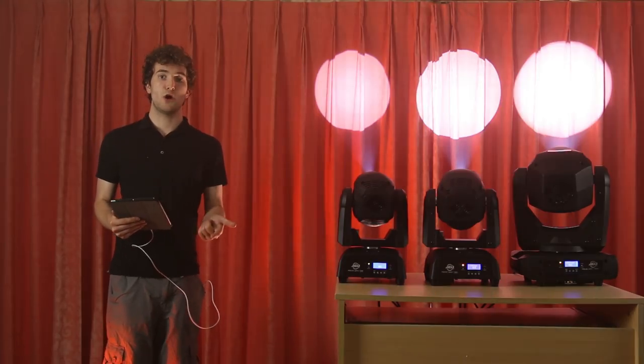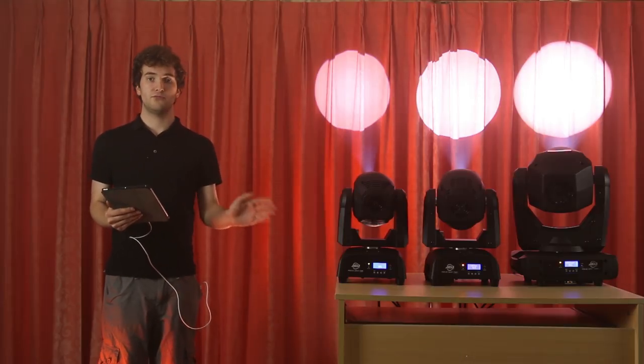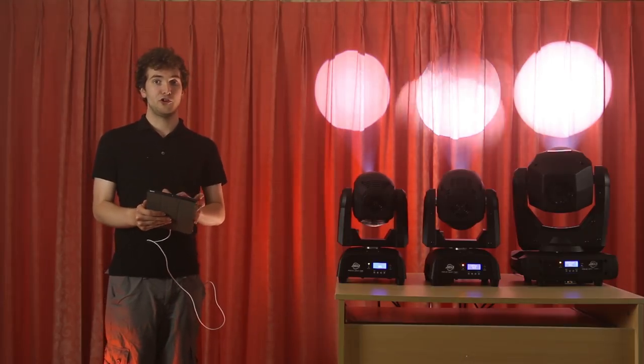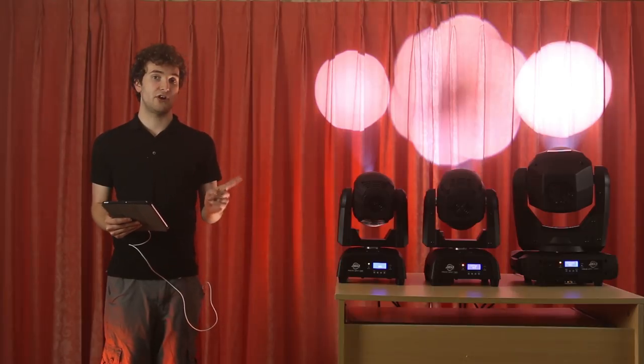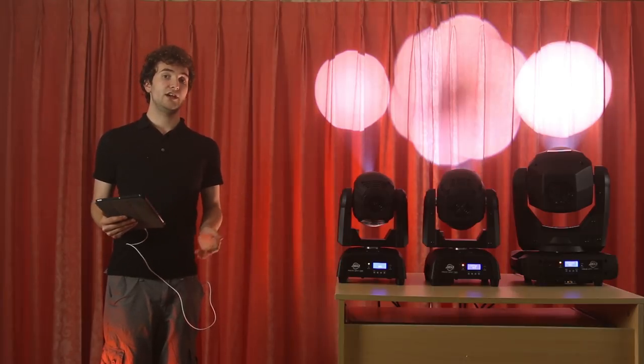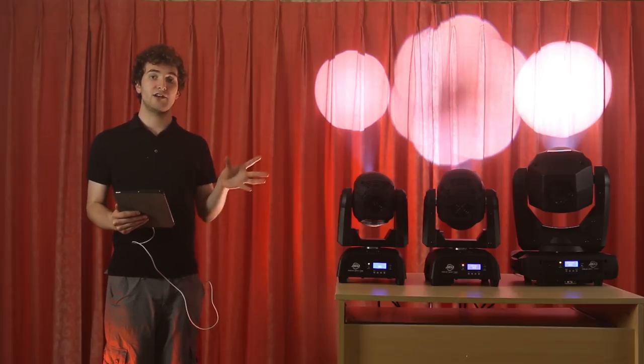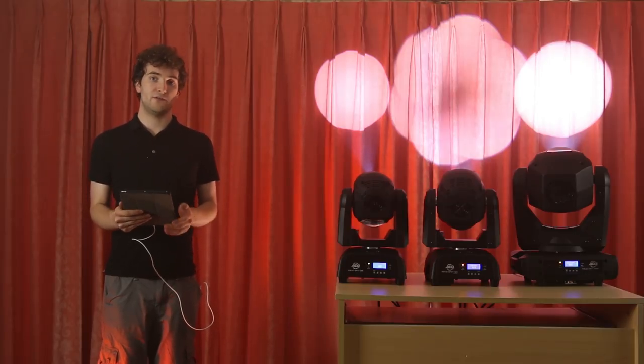After colour and gobo, we've of course got prisms. Now, the FocusBot 1 doesn't have a prism, but the FocusBot 2 does have a single six-facet circular prism. The only thing about it is it doesn't rotate. So if you want to get that aero-rotating effect, you need to rotate the gobo instead of the prism.